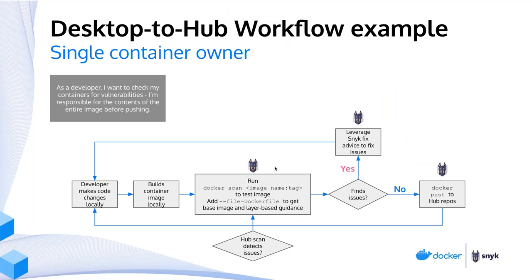So let's look at two main scenarios we see out in the wild. The first scenario is the developer scenario: your development team owns all your images, owns writing code, building the images, pushing them to Hub and getting them into production — either through CI/CD or manually. They start out making changes, writing code, they build their container image locally, then do a Docker scan, fix issues, and finally push that image up to Hub where the scan will run again.